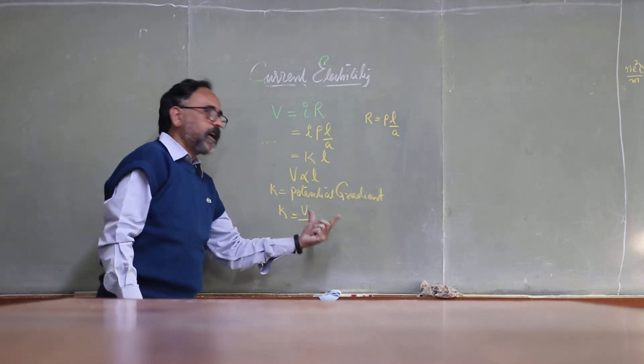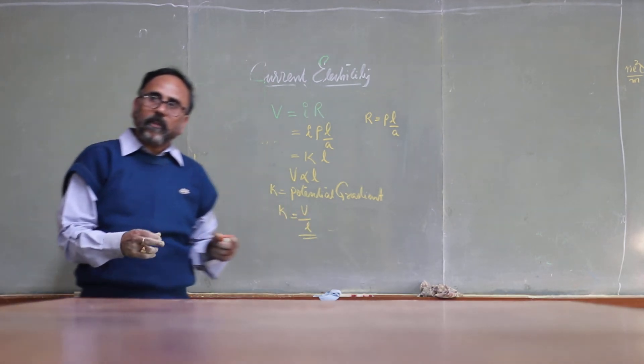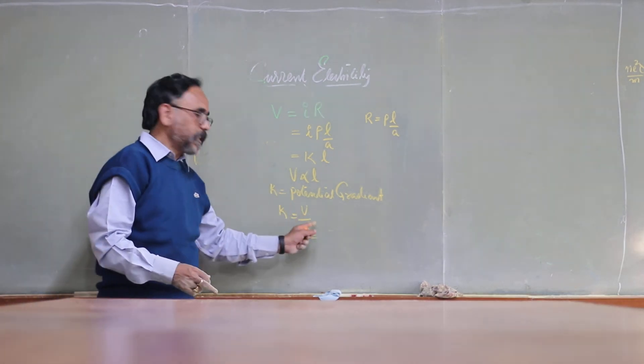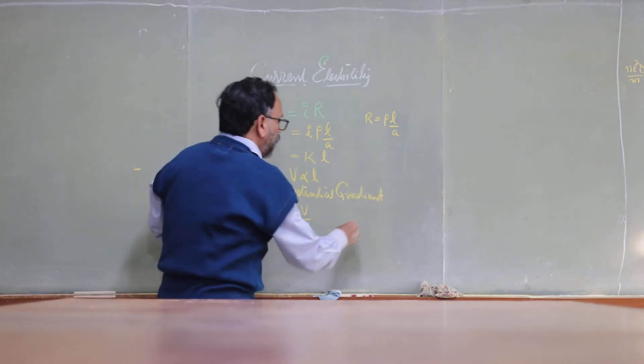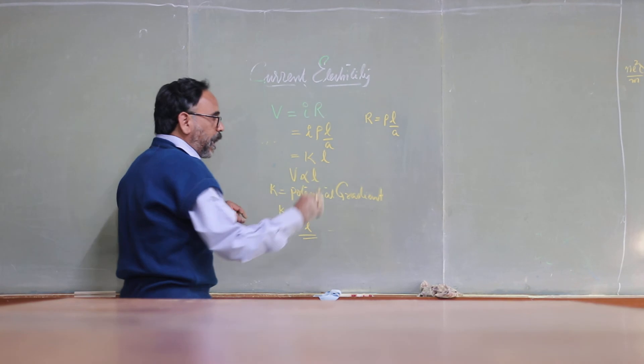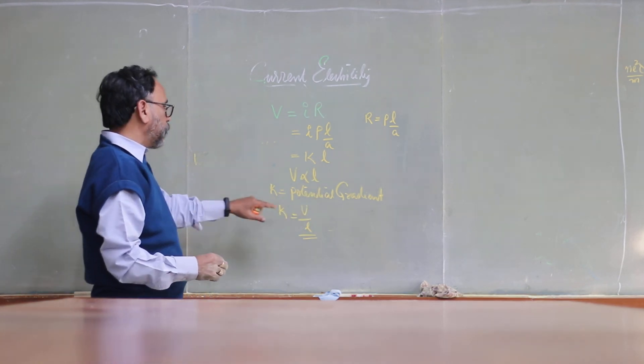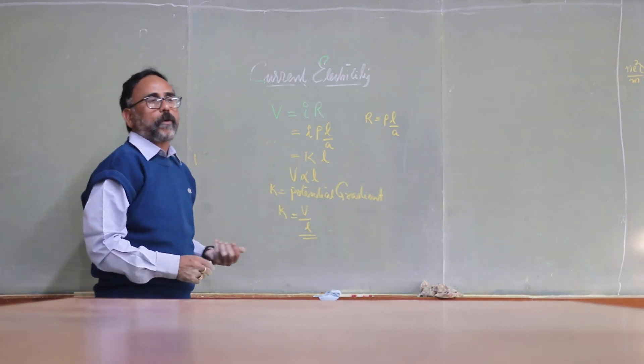That means for equal intervals of length of the wire, we get different potential differences. So it is always better to take a ten-wire potentiometer when compared to a single-wire potentiometer.